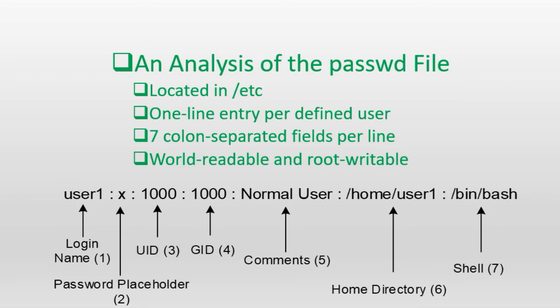By default, Linux creates a group for every new user account matching the username and with the same GID as their UID. The GID defined in this field represents a user's primary group. Group ID zero is reserved and used for the root group account. GIDs between 1 and 999 are reserved for service group accounts, and GIDs starting at 1000 to the default maximum of 60,000 are used for normal group accounts. This default GID classification is the same as that applied to UIDs.